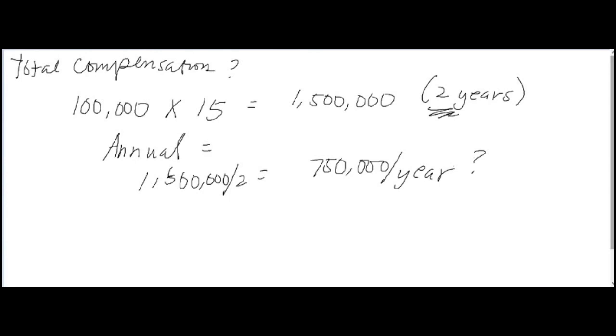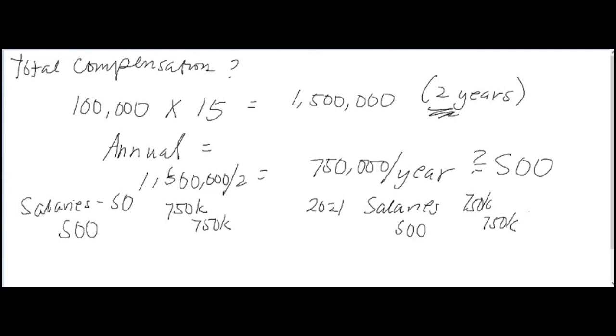And then for 2021, the same. Salaries expense, and then credit SOO, 750K. So that's it, the two years are done. Now what if they exercise it completely? If they exercise it completely, on 2022, you have to recognize the exercise date journal entry. What is that? It's the combination of cash, SOO debit, and then credit OS and share premium.